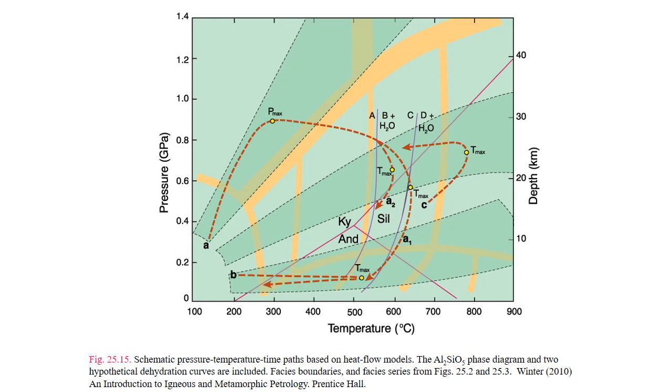Thus, a thickened crustal block quickly will equilibrate to pressure max, while remaining relatively cool. The increased thickness of the crust is rich in both large ion lithophile elements and radioactive elements, so heat flux is going to increase. Subduction zone magmatism may also deliver additional heat.